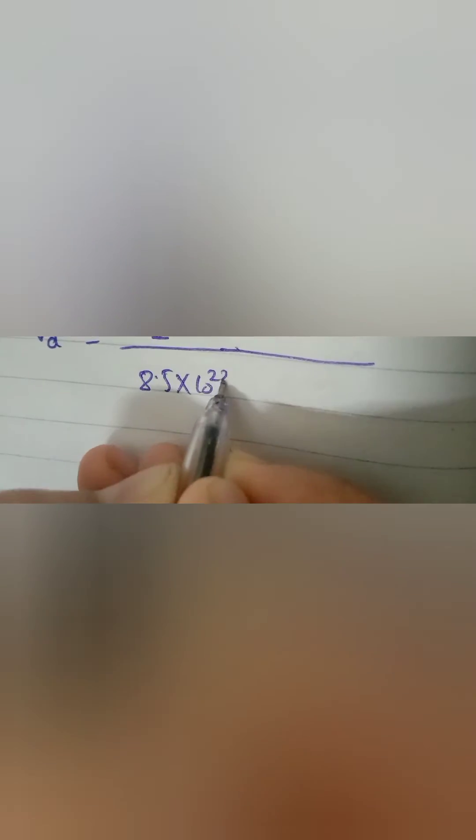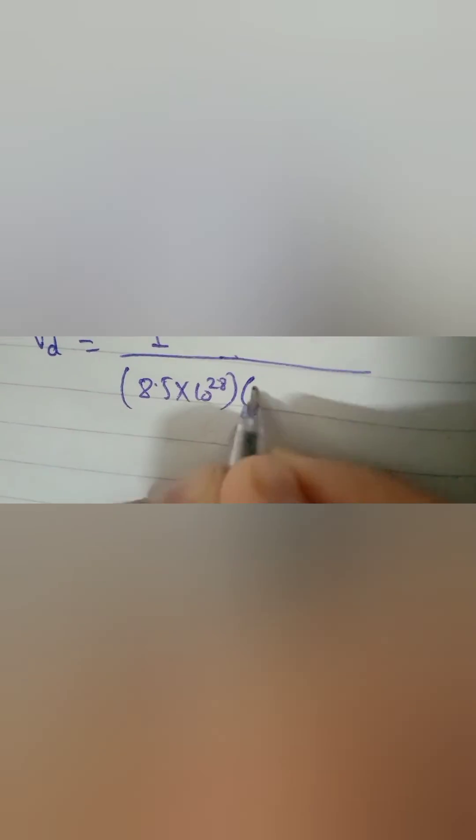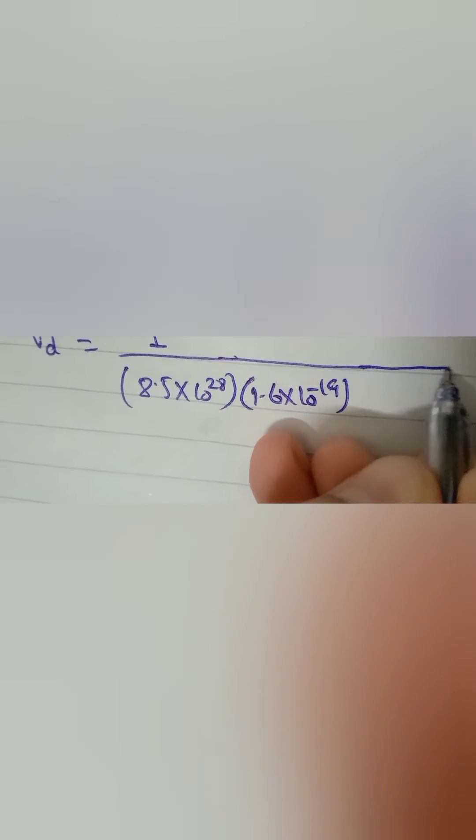Now let us put the values in our equation number 1. Vd is equal to I over eta E A, so just put in the values - value of eta, value of E, and value of area.